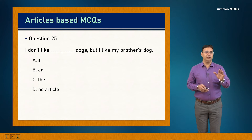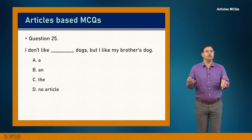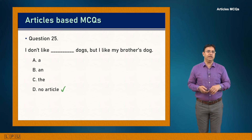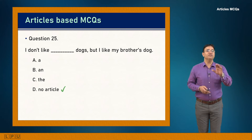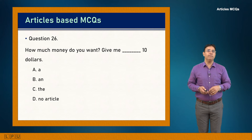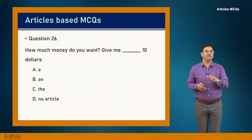Question 25: I don't like dash dogs, but I like my brother's dog. This is a general statement about dogs as a group — plural generic noun, no article needed. 'The dogs' would imply specific dogs. Answer is D: 'I don't like dogs, but I like my brother's dog.'